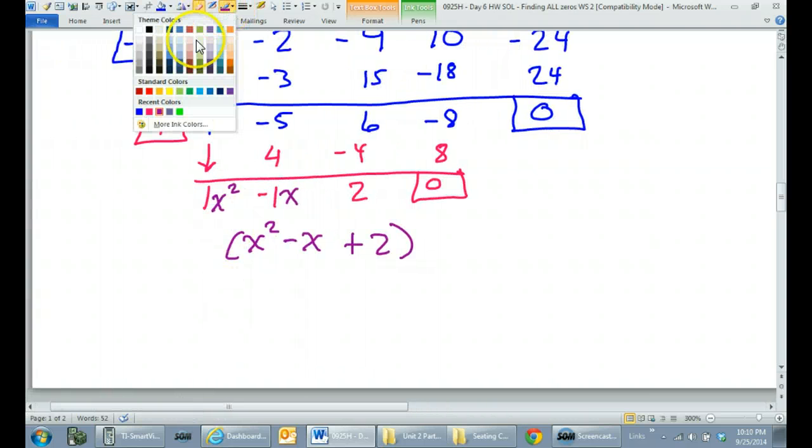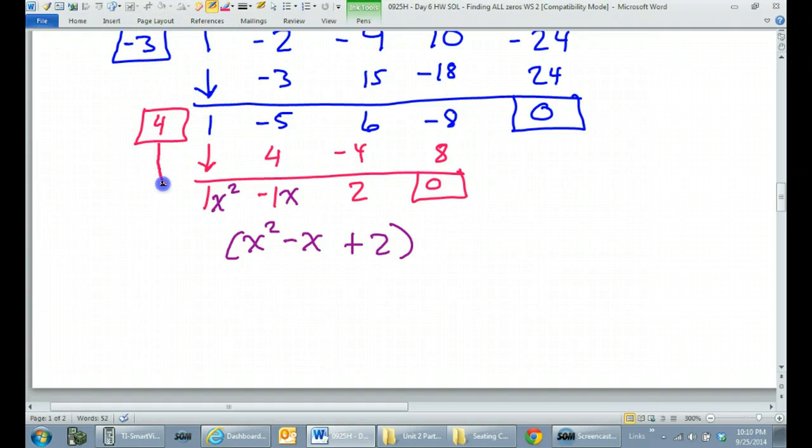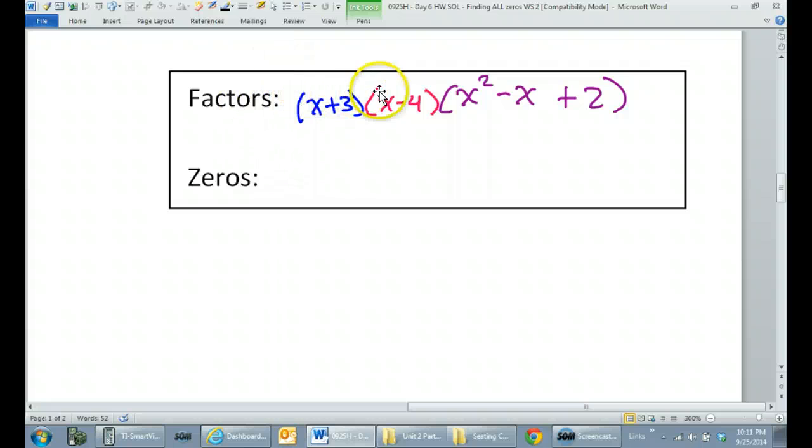Anyway, let's go ahead and use the zeros to make the other factors. So the zero of 4 would come from a factor of x minus 4. And this zero of negative 3 would come from a factor of x plus 3. So this is factored completely at this point. So these are the factors.